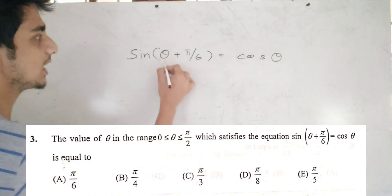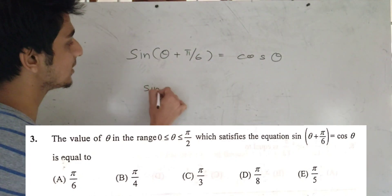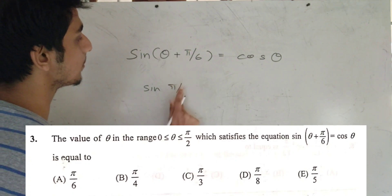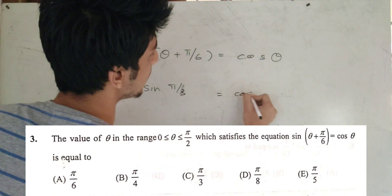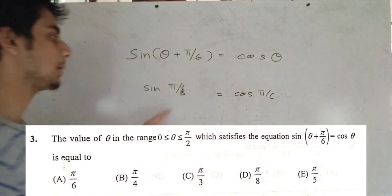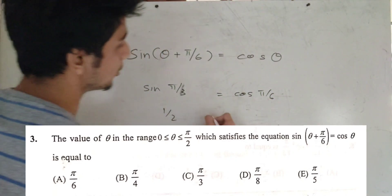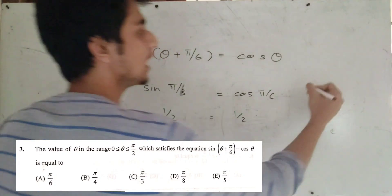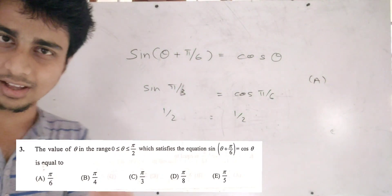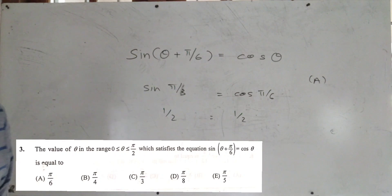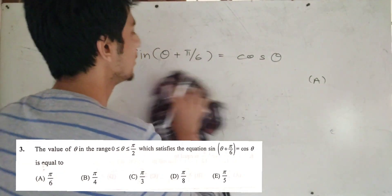If θ = π/6, then sin(π/6 + π/6) = sin(π/3), and cos(π/6) gives 1/2. So cos θ = 1/2, which means the value of theta is positive and the answer is equal. Given theta lies between 0 and π/2.